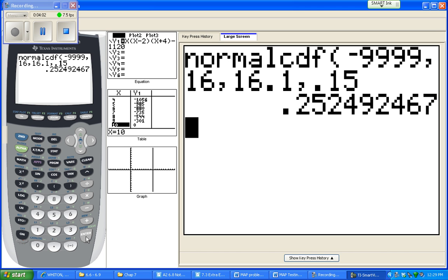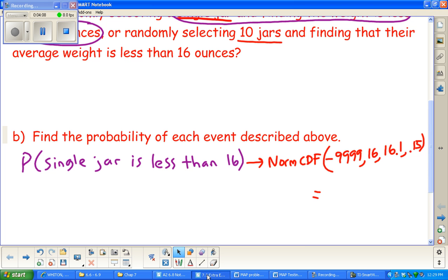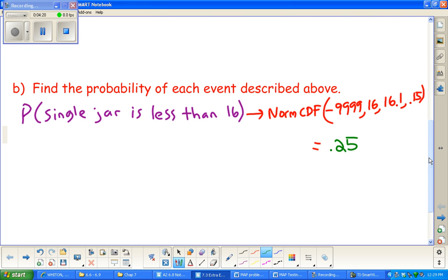Mean and standard deviation were given to us of 16.1 and 0.15. That's going to be your probability of getting any individual jar being less than 16 ounces, so about 25 percent.